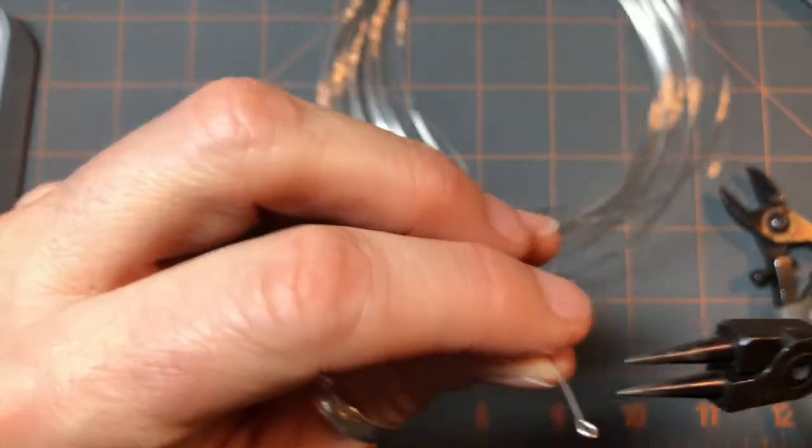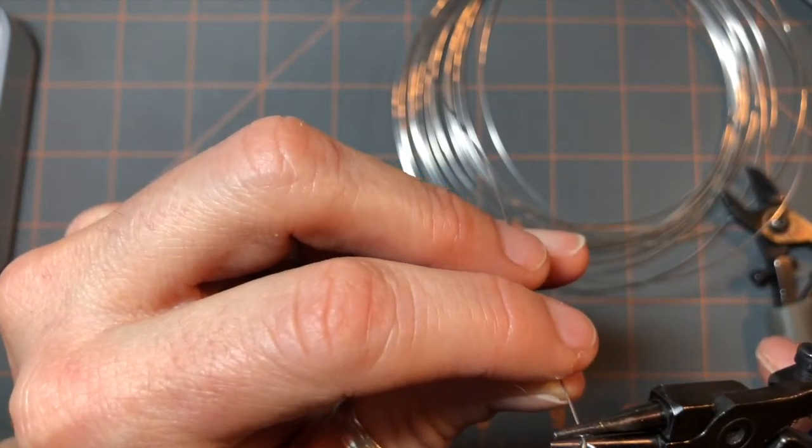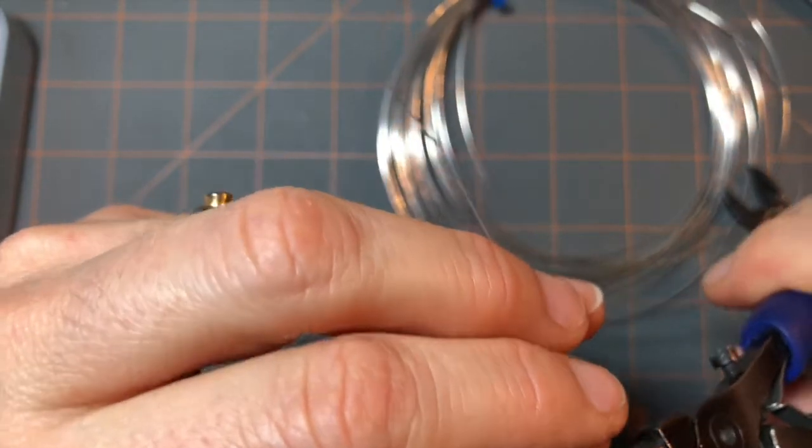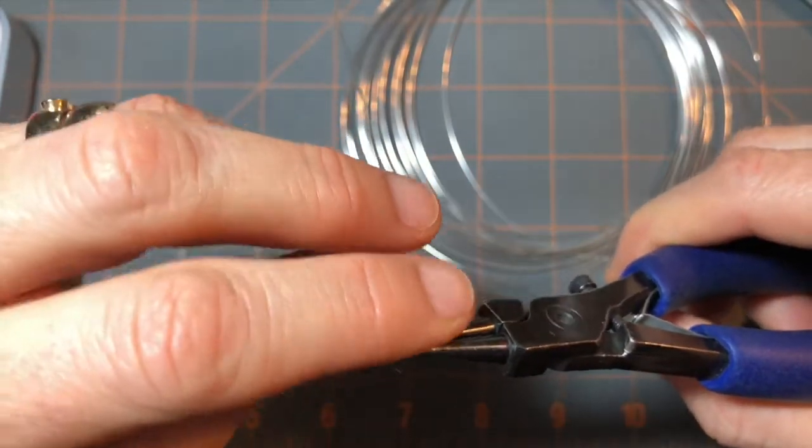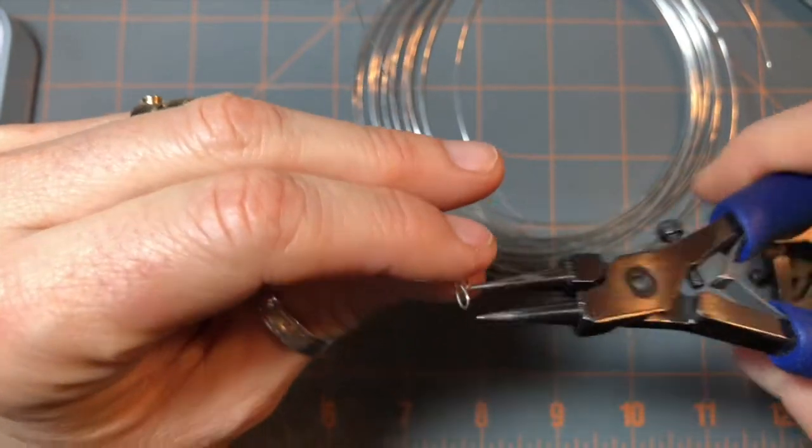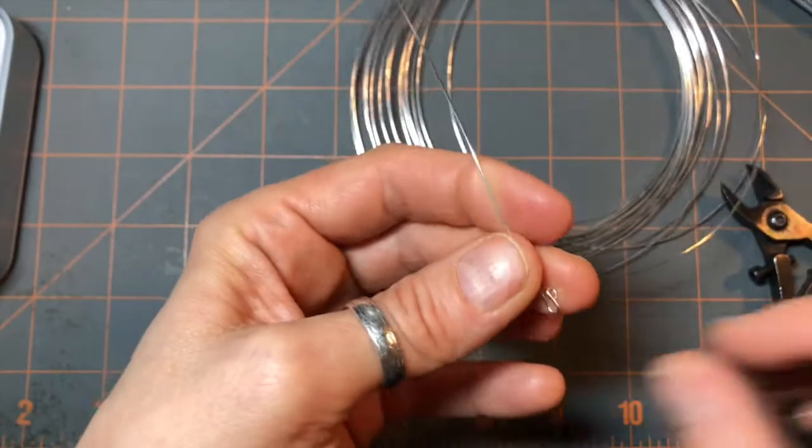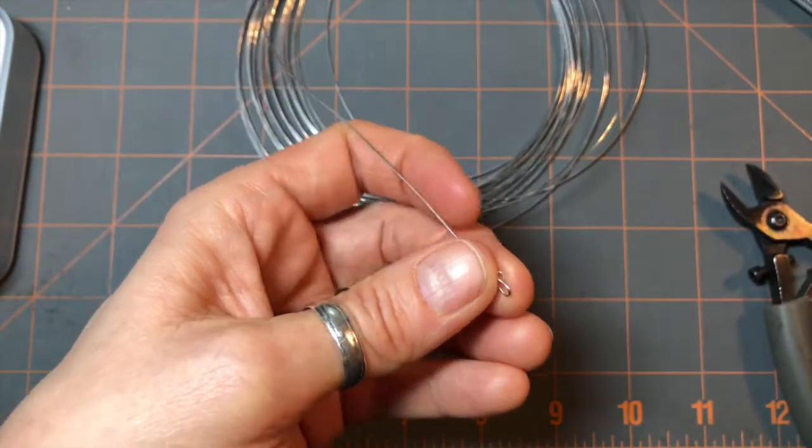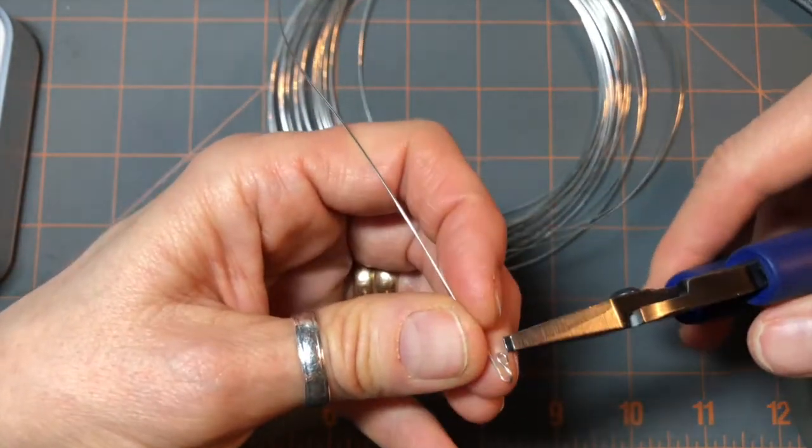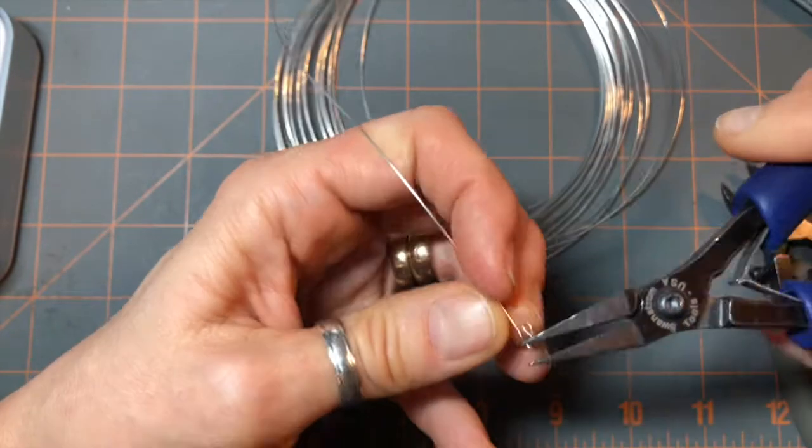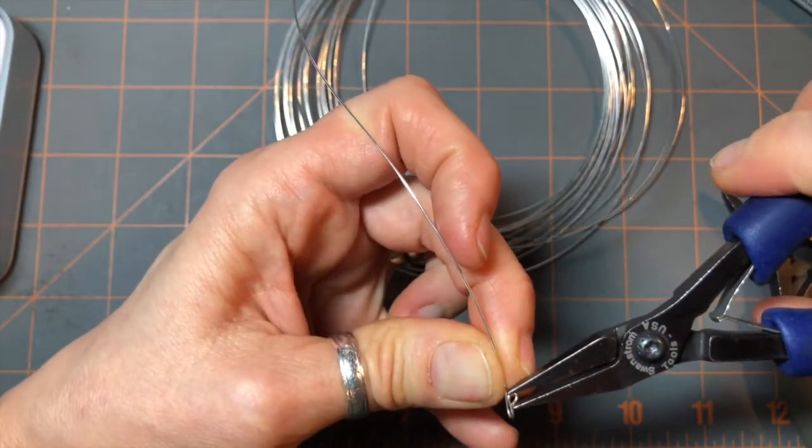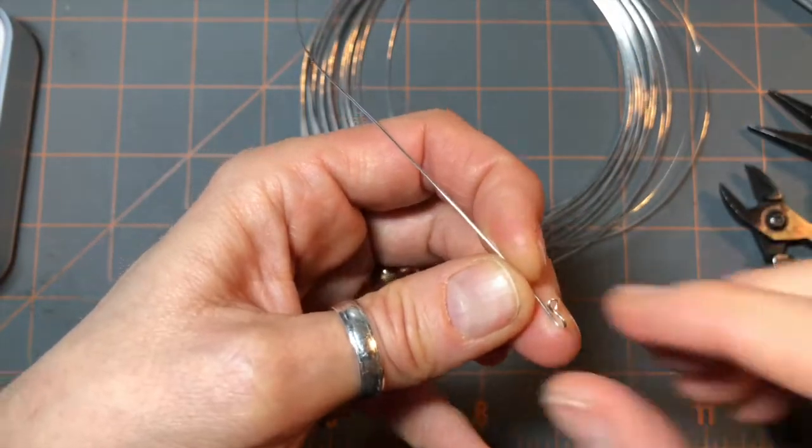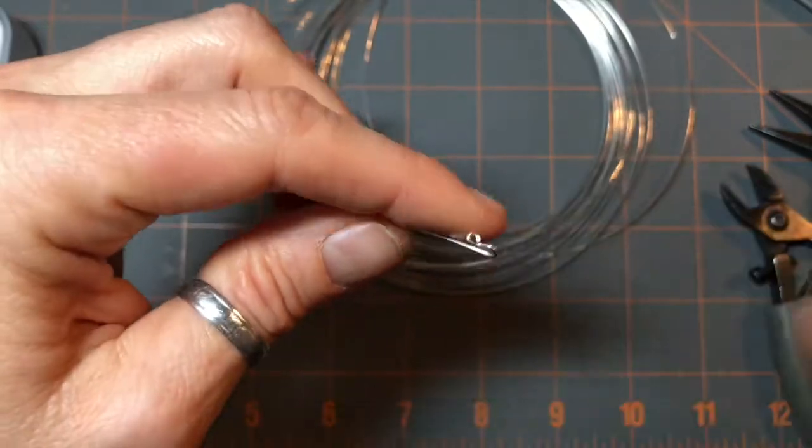Now with your round nose pliers, underneath the loop, perpendicular, you're gonna make like a half loop. And this is the channel your dangle is gonna fit in. So you don't completely close that loop, you just make a small bend. Then I tend to take that small loop at the end and just kind of angle it outward a little bit.